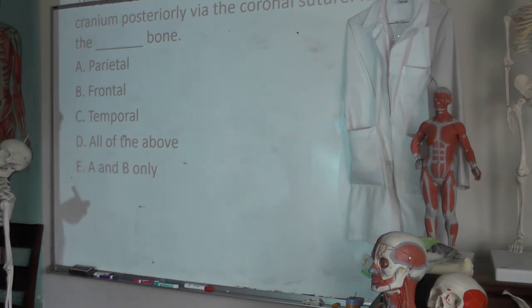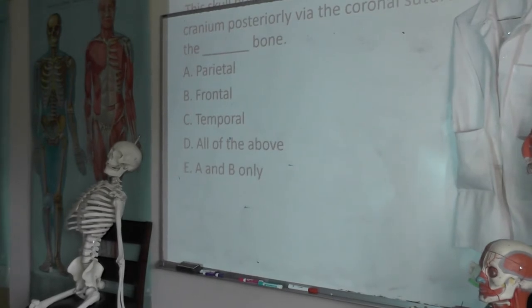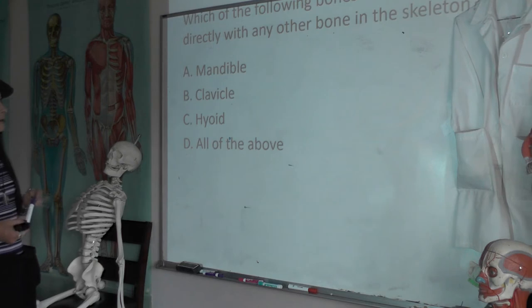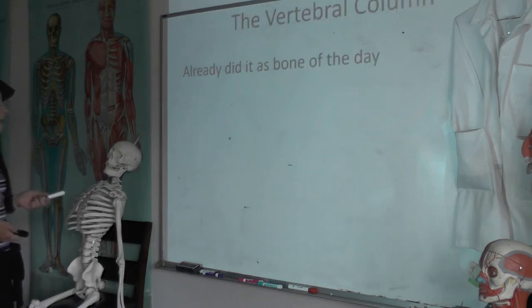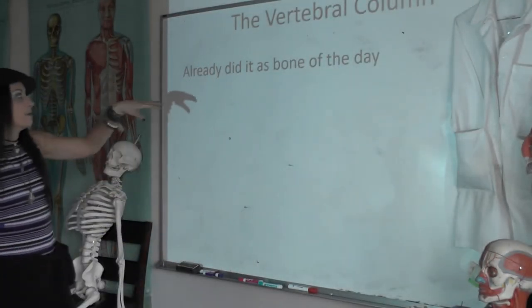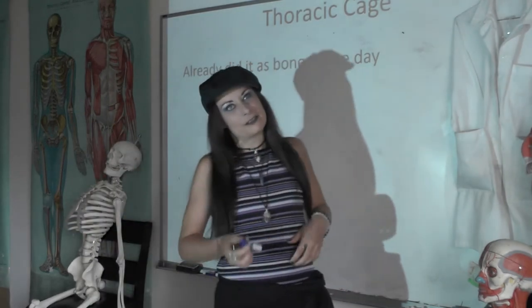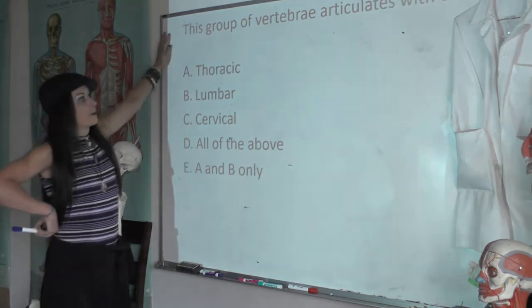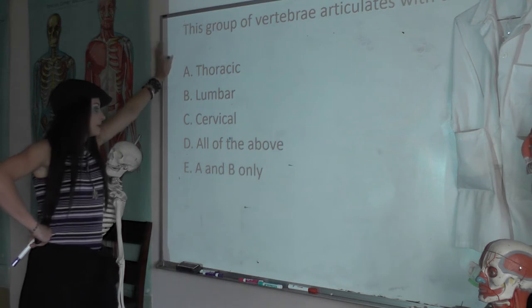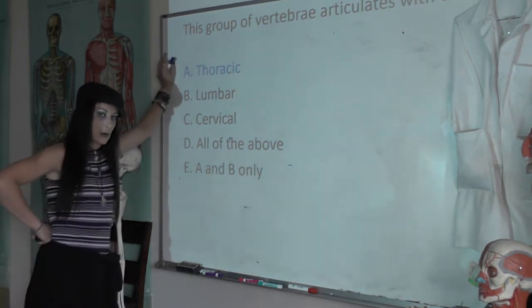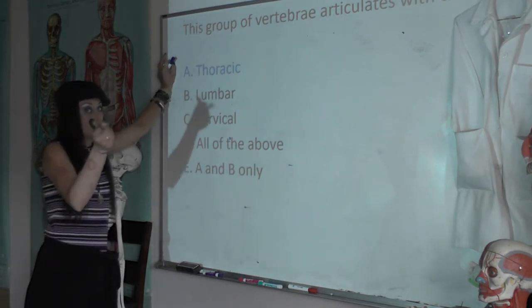This skull bone is connected to the rest of the cranium posteriorly via the coronal suture — it is the frontal bone. Next question: which of the following bones does not articulate directly with any other bone in the skeleton? A, the mandible; B, the clavicle; C, the hyoid; D, all of the above. C, the hyoid. The vertebral column — we already did it as bone of the day, so go back and watch it. The thoracic cage — already done. This group of vertebrae articulate with the ribs: A, thoracic; B, lumbar; C, cervical; D, all of the above; E, A and B only. The answer is A, thoracic. Thoracic vertebrae have those articulating facets on their transverse processes and on their bodies because they articulate the ribs.